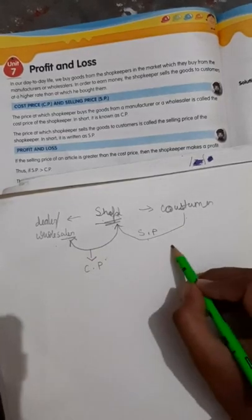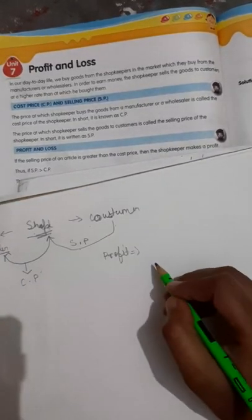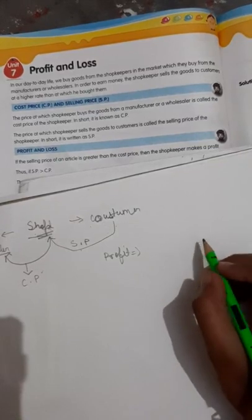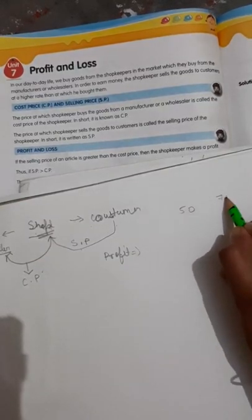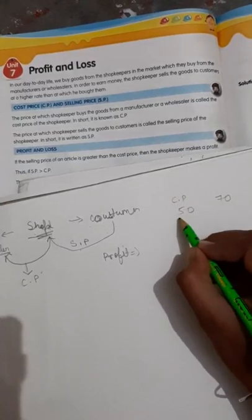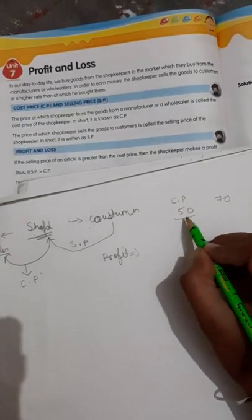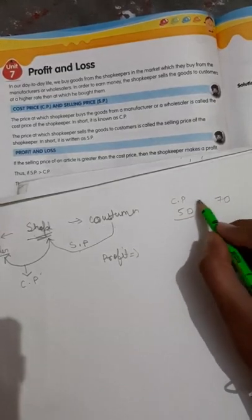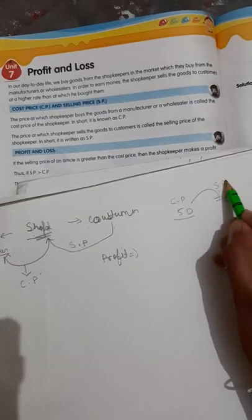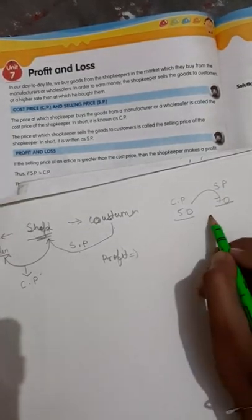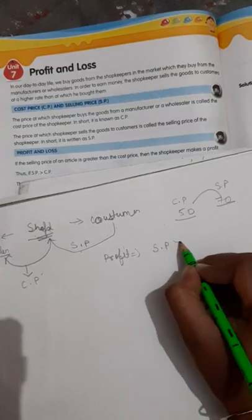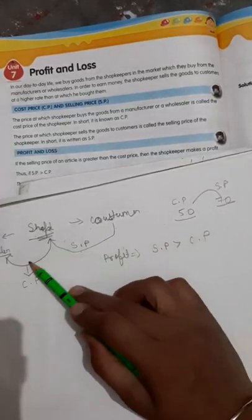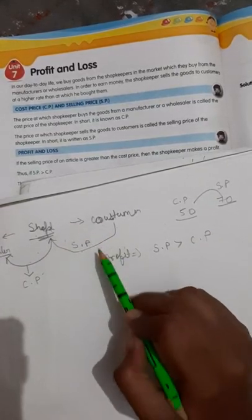Now what is profit and what is loss? Suppose you are a shopkeeper. You bought a book and its cost is 50 rupees, and you sold that book for 70 rupees. The cost price — what you bought from the wholesaler — is 50 rupees, and you sold it for 60 rupees. So the profit you get is 20 rupees. Whenever the selling price is greater than the cost price, that is profit.